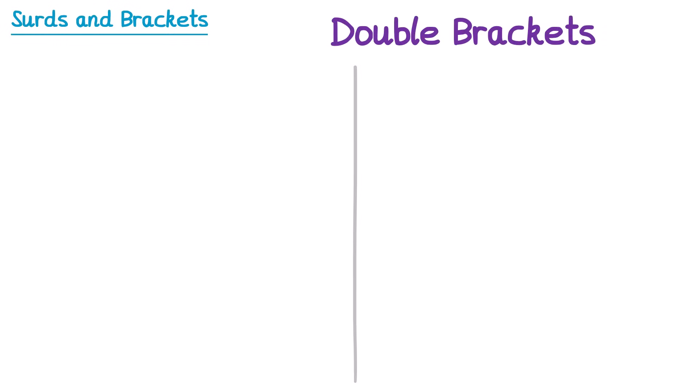Now let's have a look at some examples with double brackets. Once again we use the same rules as we do with algebraic terms, but we use the surd rules for multiplication. We multiply everything in the first bracket by everything in the second bracket, which means we need to do 4 multiplications in total.